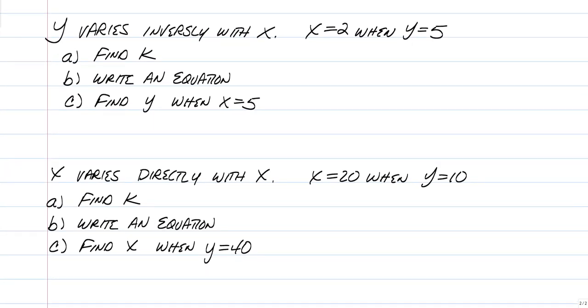All right, last three questions. Now we're going to take it up to its highest level for now. What we're going to do is not only write an equation for specific data, we're going to use it to find more. So this first example says that Y varies inversely with X. X is equal to 2 when Y is equal to 5. We're going to find K, we're going to write an equation, and then we're going to find Y when X is equal to 5. So we're going to do three things. So step one, inversely, Y is equal to K over X. Plug in what we know. So 5 is equal to K over 2. Solve for K, so we multiply both sides by 2, and we get K is equal to 10. Step one, done.